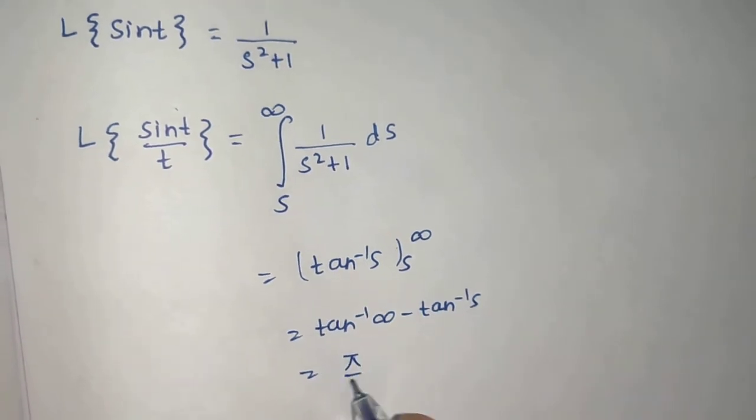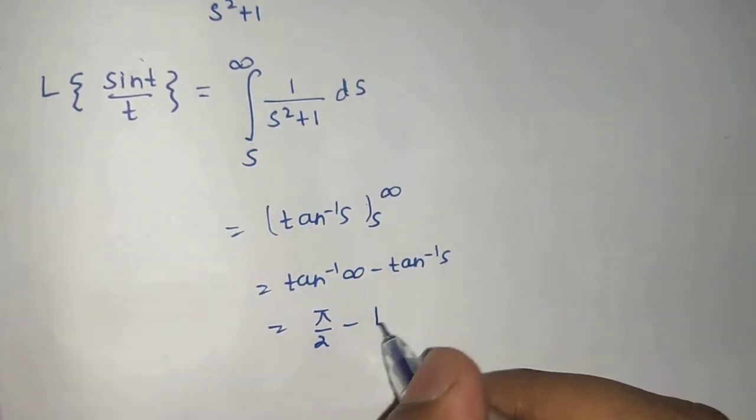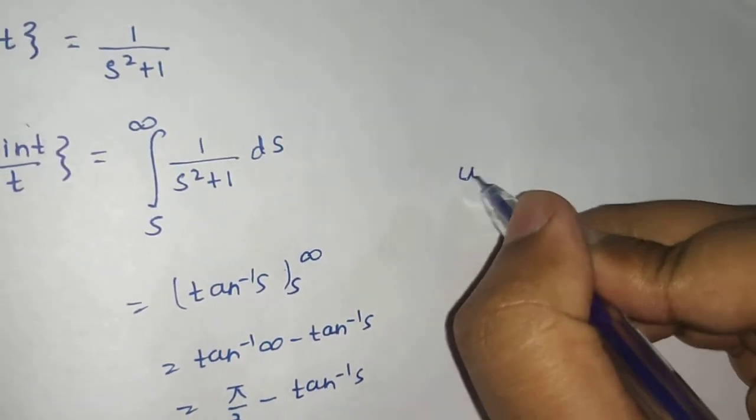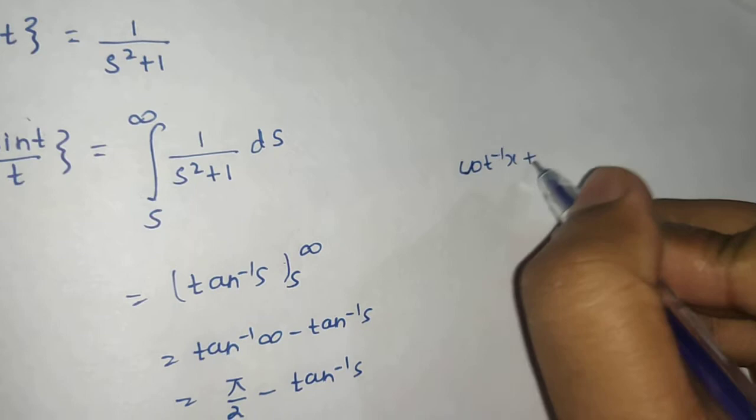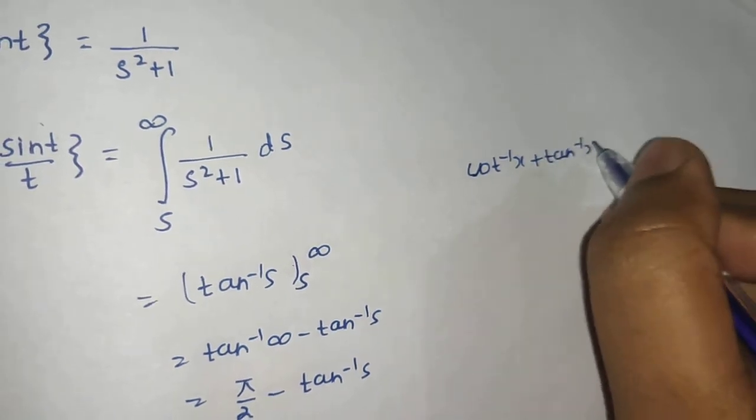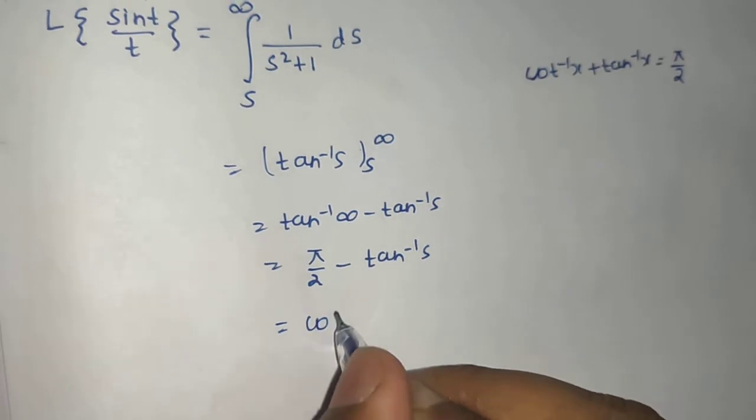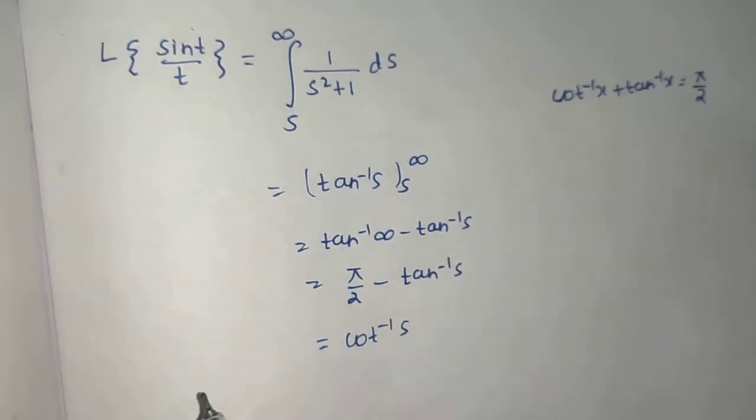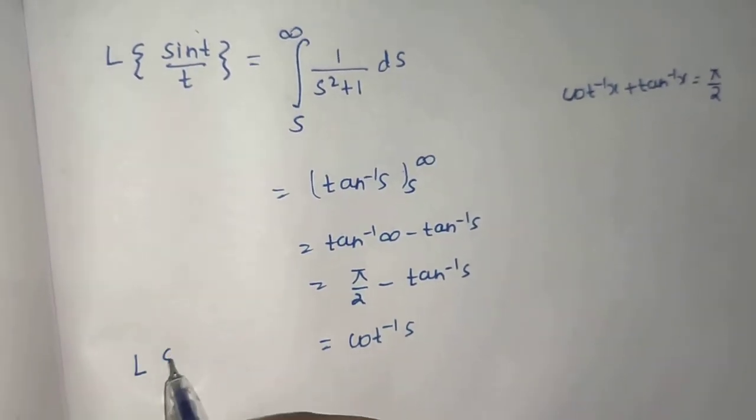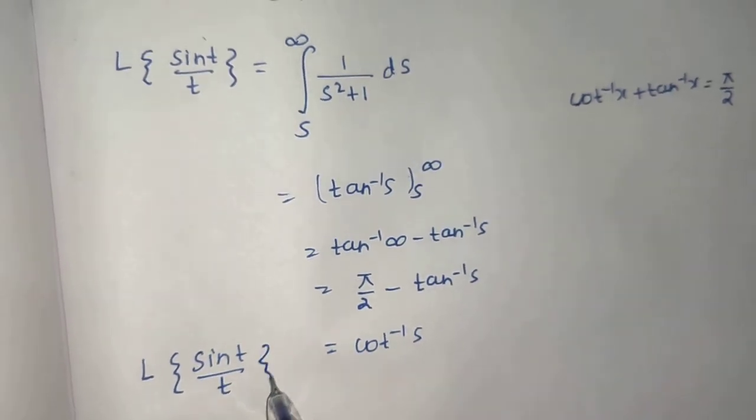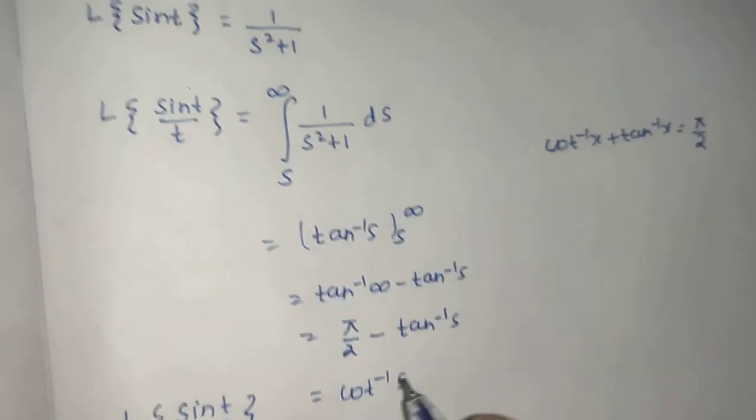This is tan⁻¹(∞) - tan⁻¹(s). tan⁻¹(∞) we all know is π/2. tan⁻¹(x) + cot⁻¹(x) gives us π/2, so from here we get cot⁻¹(s). So far we have reached Laplace of (sin t)/t which is cot⁻¹(s).